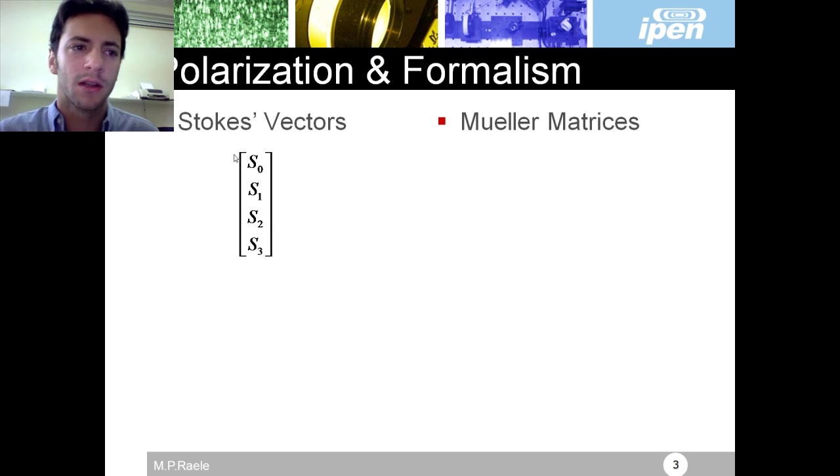Stokes vectors. What are Stokes vectors? Stokes vectors is an object that represents the light polarization state. The first one is my total intensity, the second one is vertical and horizontal intensity, the third one is the 45 degrees and minus 45 degrees, and the fourth one is right-handed and left-handed polarization.